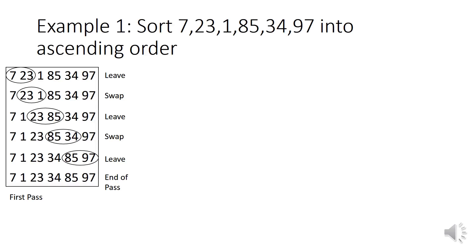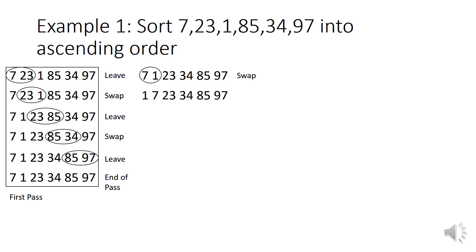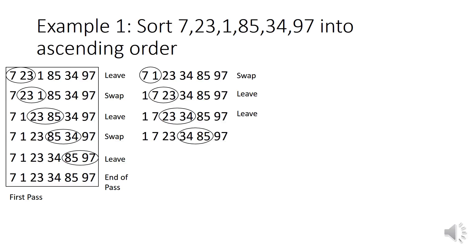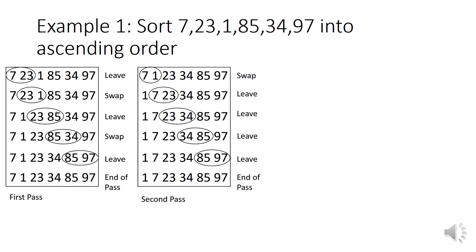Now what we need to do is do this again, because as you can see it isn't sorted yet — it's more sorted but it's not finished yet. So we do a second pass. We take the end-of-pass list from pass 1 and rewrite that at the top. Now we're going to go through this again. They're unordered so we swap them. They're ordered so we leave them. Ordered so we leave them. Ordered so we leave them. Ordered so we leave them. That's the end of the second pass.